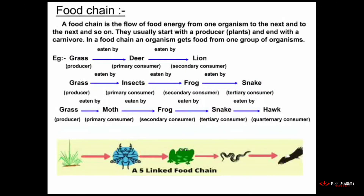Food chain: A food chain is a flow of food energy from one organism to the next and so on. They usually start with a producer and end with a carnivore. For example, grass is eaten by a deer and the deer is eaten by a lion — energy flows from grass to deer to lion.